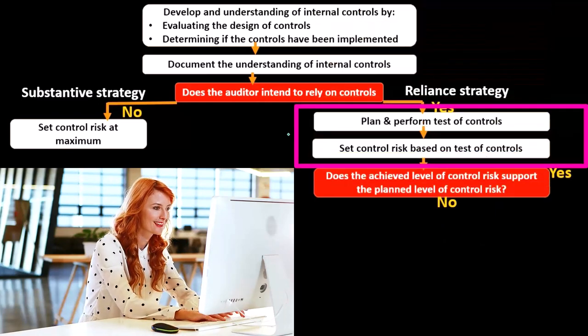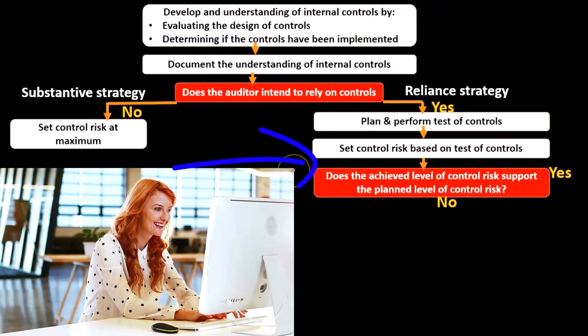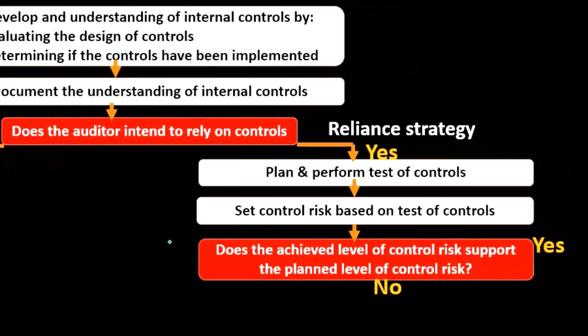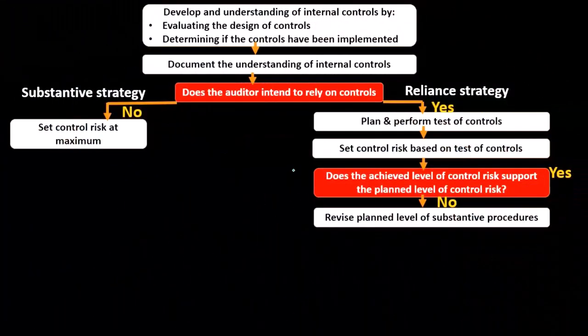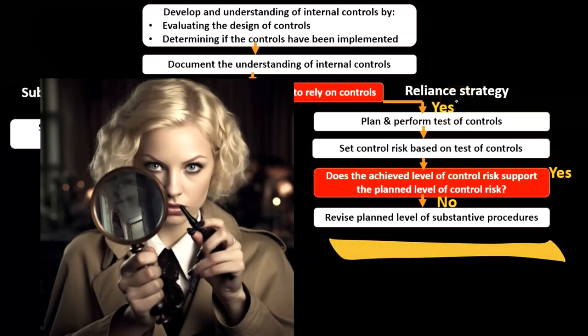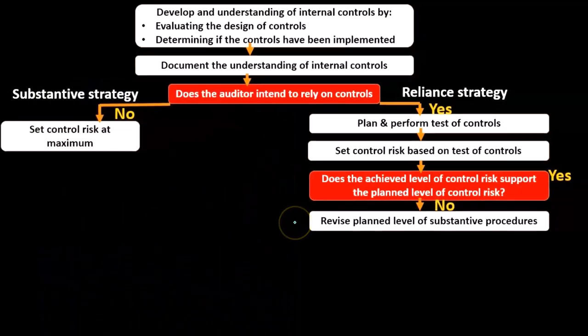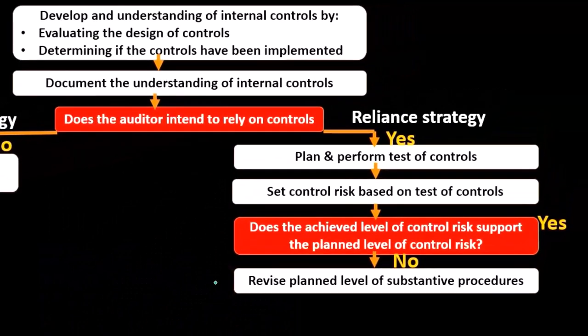Once we test the controls and set the control risk, we ask ourselves: does the achieved level of control risk support the planned level of control risk? If the answer is no, we're going to revise the planned level of substantive testing. With a reliance strategy, we set the control risk level, do the testing, and if an adjustment is needed, we revise the level of substantive procedures accordingly.